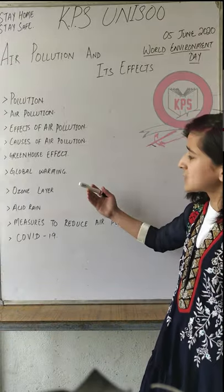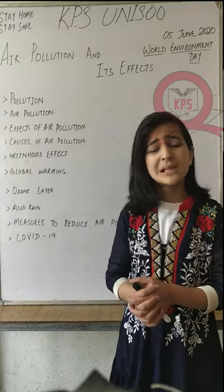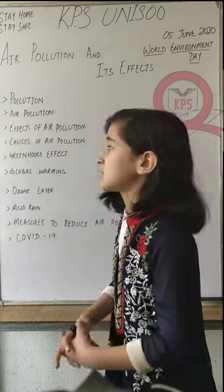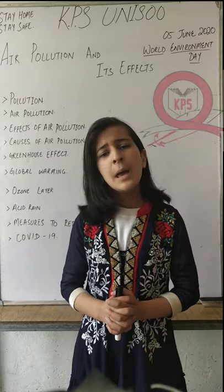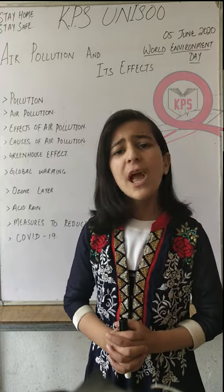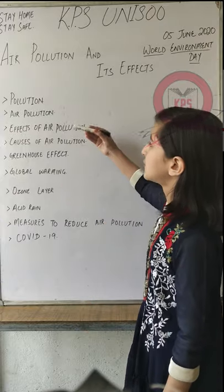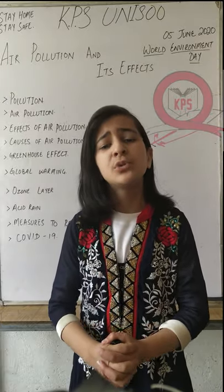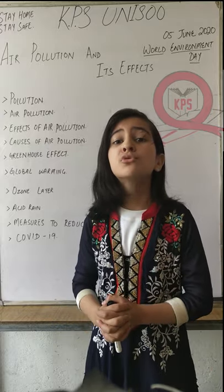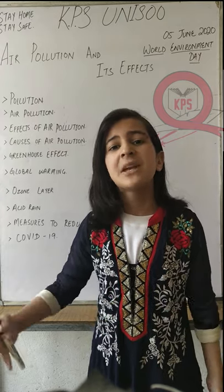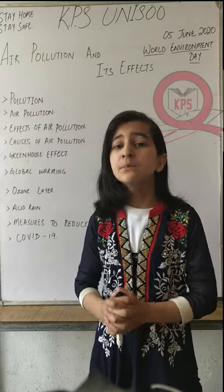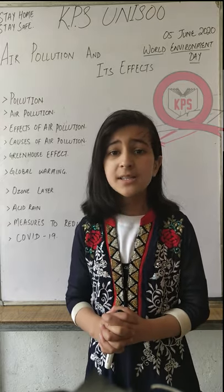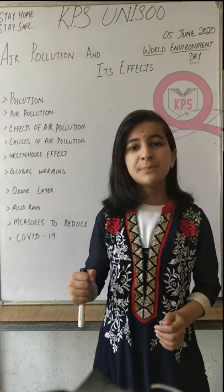We discussed about acid rain, ozone layer, global warming, air pollution, greenhouse effect, and pollution. Now what we have to do is try to slow down the levels of air pollution. To reverse or slow down air pollution, we have to make sincere efforts. Like, we have to stop using fossil fuels, switch to renewable energy, plant more trees, and follow the three R's — reduce, reuse, and recycle — to reduce waste production and help Earth become a better place to live.